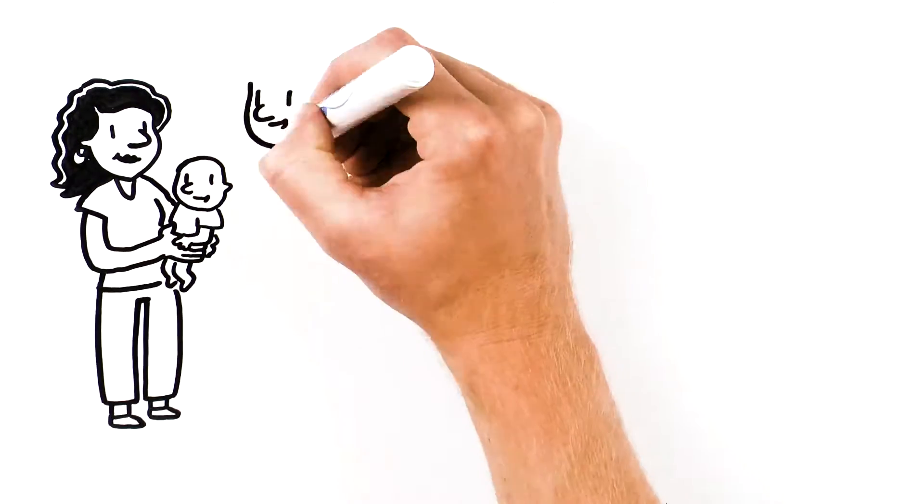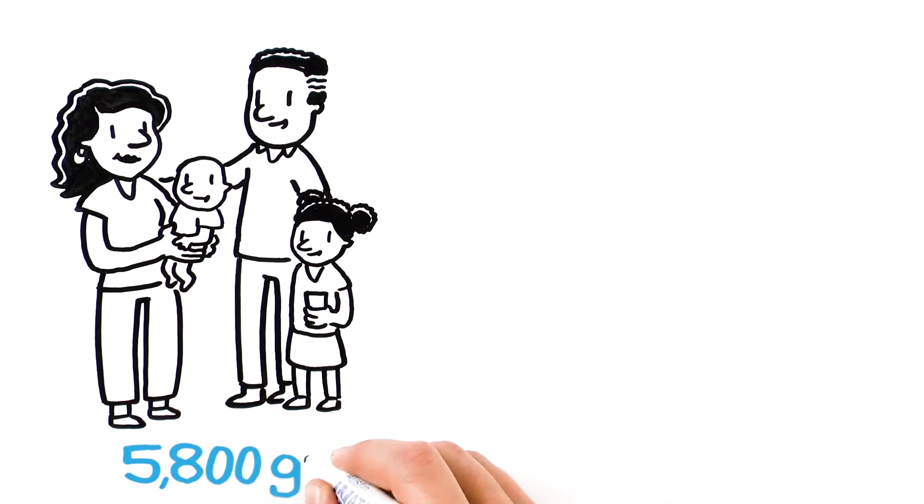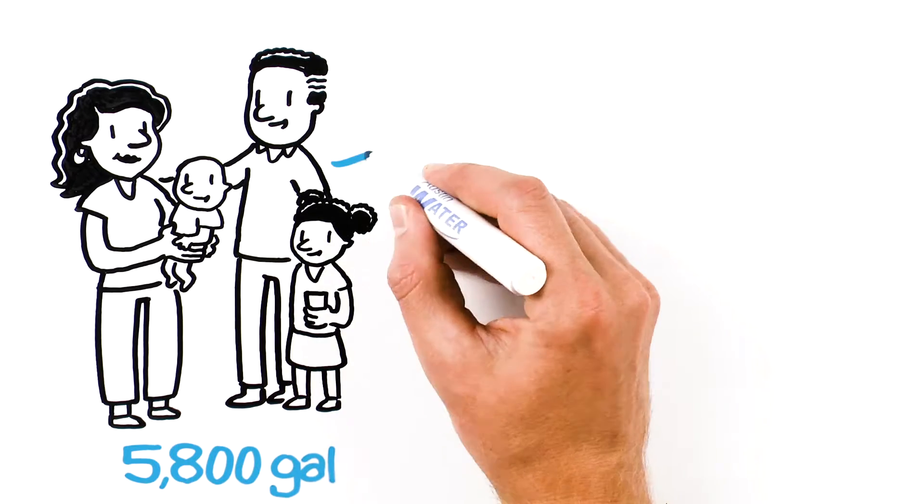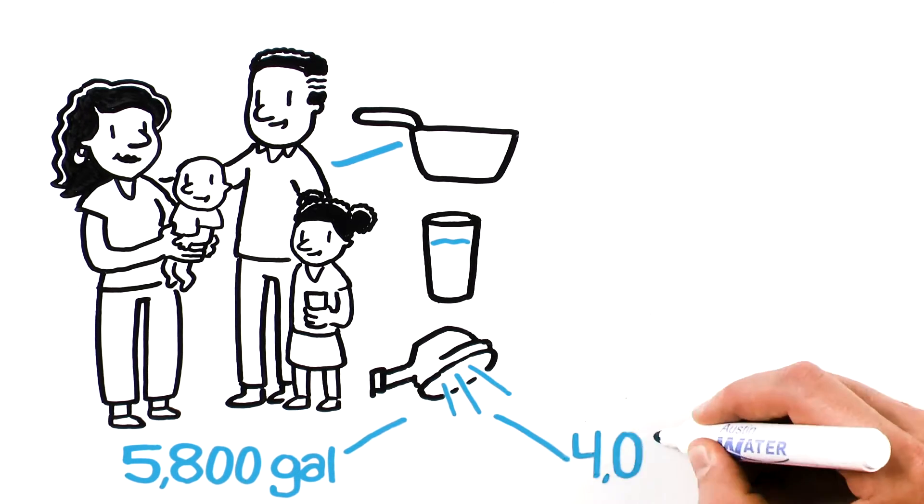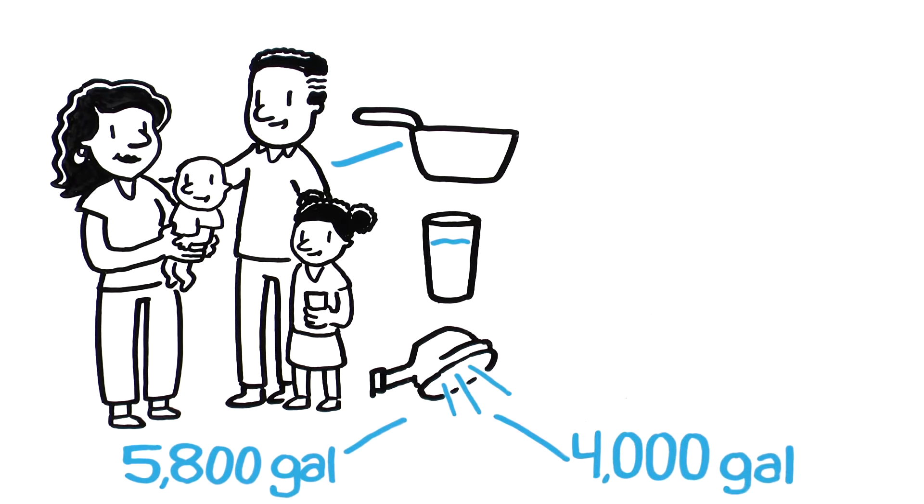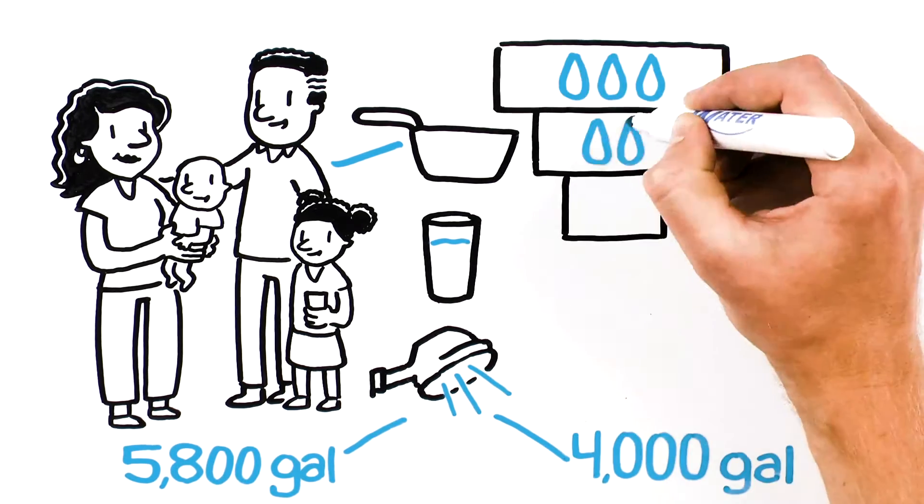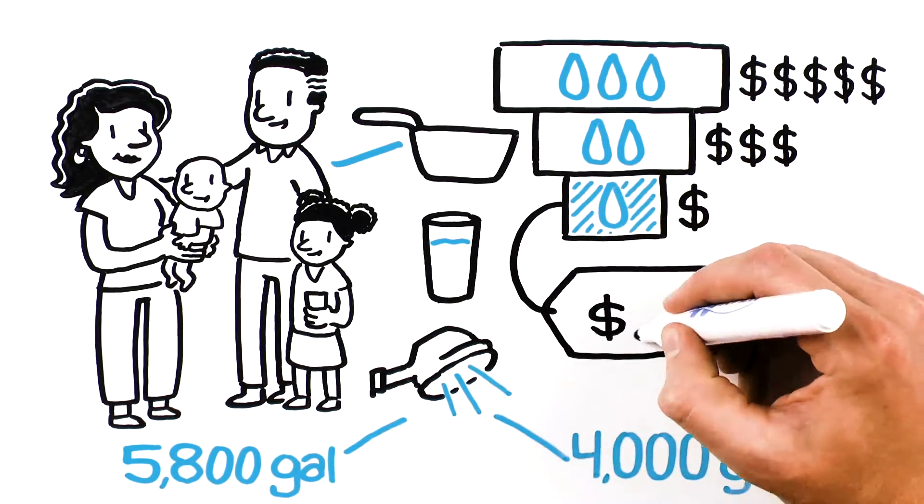For example, this family uses about 5,800 gallons of water each month for cooking, drinking, and showering. These tasks also produce about 4,000 gallons of wastewater, putting them in the lowest rate tiers. Their bill is around $80.